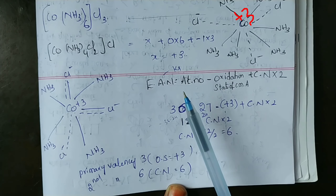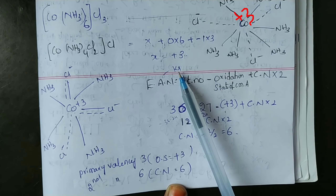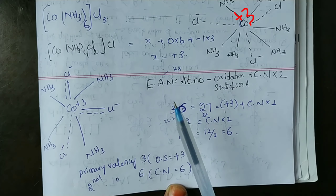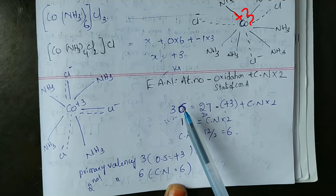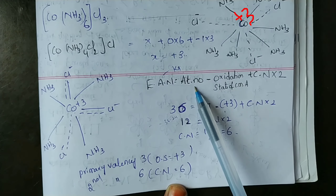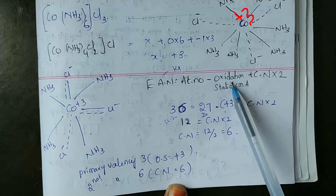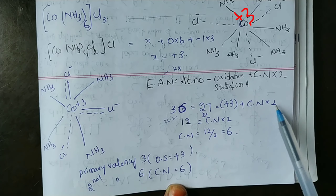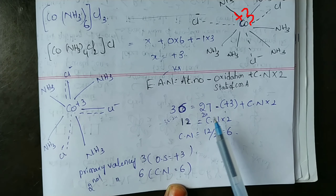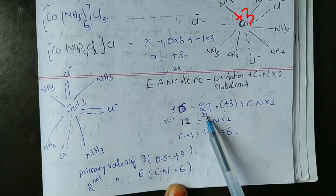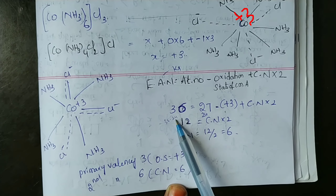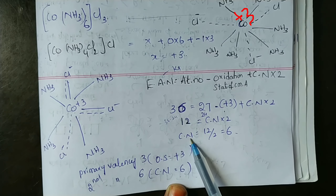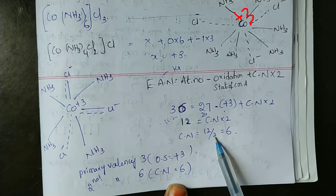Cobalt's nearest noble gas is krypton, so krypton's atomic number (36) is the effective atomic number of cobalt. Therefore: 36 = 27 − 3 + coordination number × 2. That gives 27 − 3 = 24, and 36 − 24 = 12. So, 12 = coordination number × 2, meaning coordination number = 12 ÷ 2 = 6.